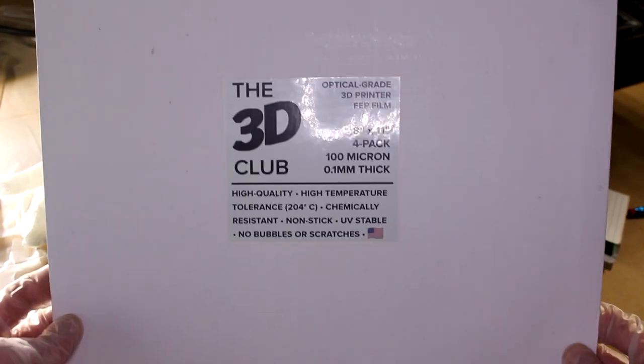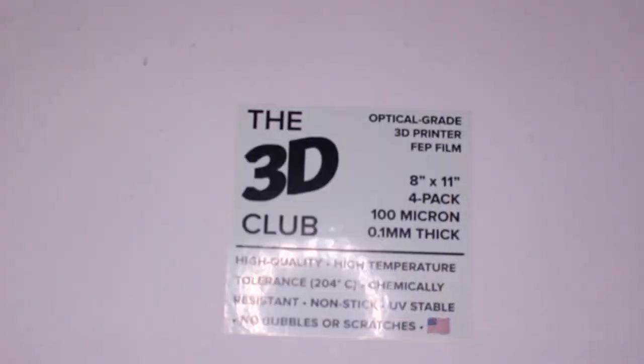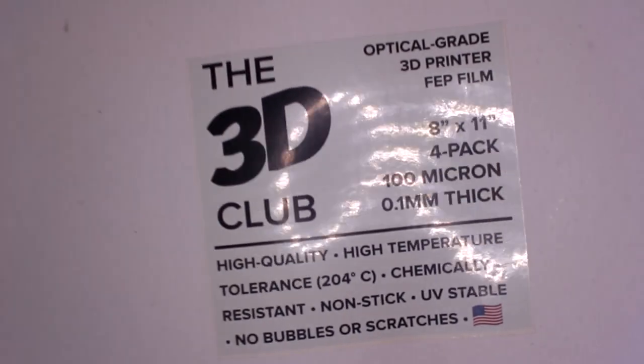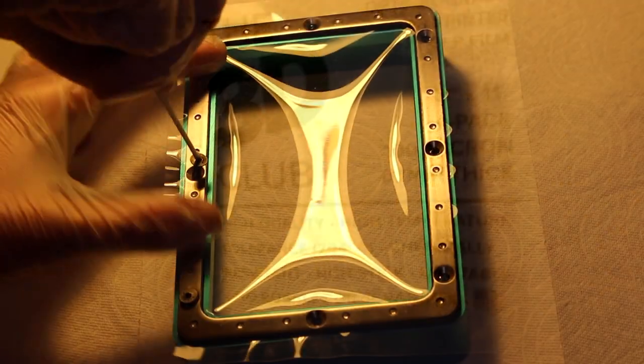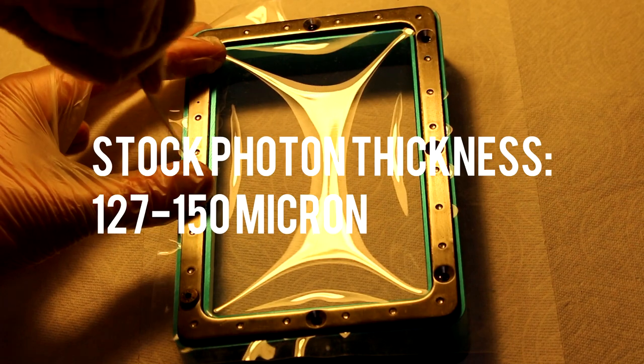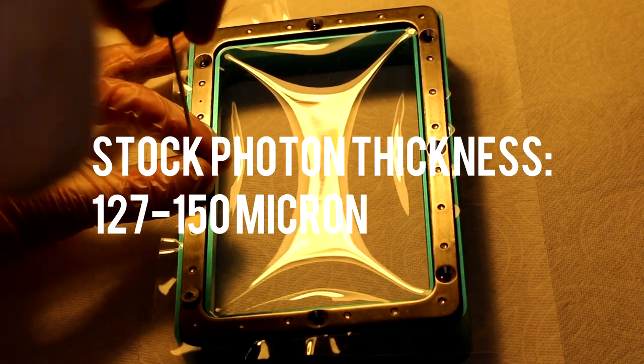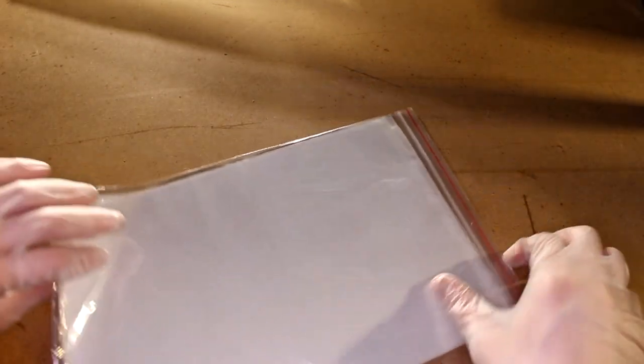Here's something from Amazon with some incredibly positive reviews so far. It's called 3D Club, and they have 50, 100, and 200 micron sheets. I believe the stock Anycubic Photon uses a 127 micron sheet, so this is a first for us.